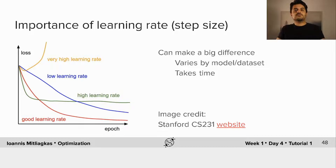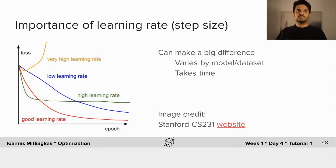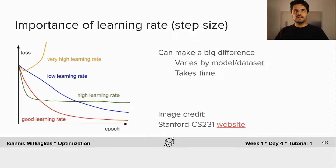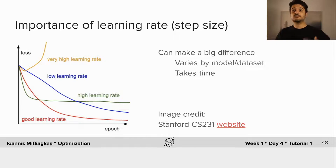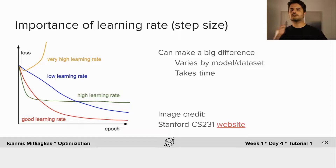There's a whole zoo of situations that you can find when you're trying to engineer these systems. The tuning of the learning rate can take a lot of time, and then we have other hyperparameters to tune and other model decisions to make. Machine learning engineers spend a lot of time tuning and trying different things.